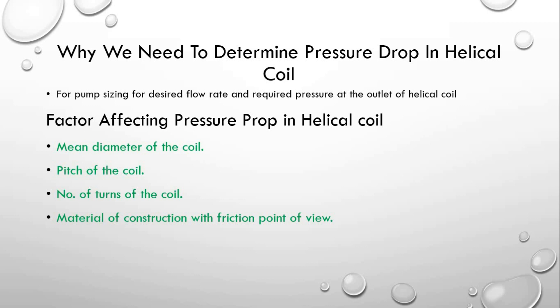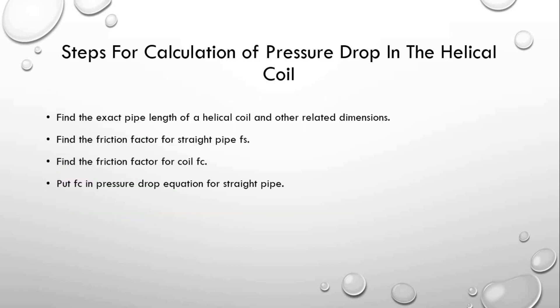The necessary factors which affect the pressure drop in the helical coil are: the main diameter of the coil, the number of turns of the coil, and the material of construction. By changing all of these, the pressure drop in the helical coil will change.